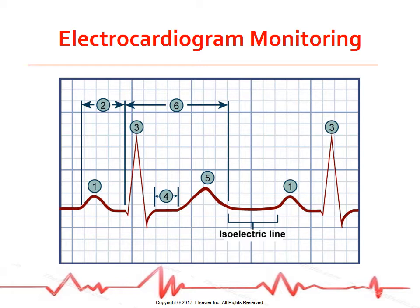The QRS complex consists of three distinct waves. The Q wave is the first negative downward deflection after the P wave — short and narrow, and not present in several leads. The R wave is the first positive or upward deflection in the QRS complex. The S wave is the first negative downward deflection after the R wave. The QRS interval is measured from the beginning to the end of the QRS complex and represents the time taken for depolarization and contraction of both ventricles.